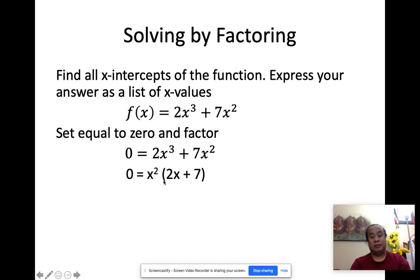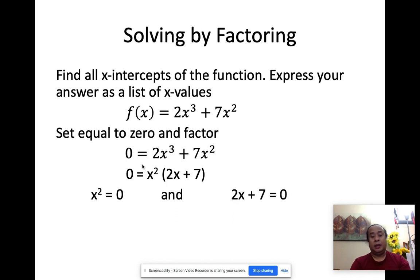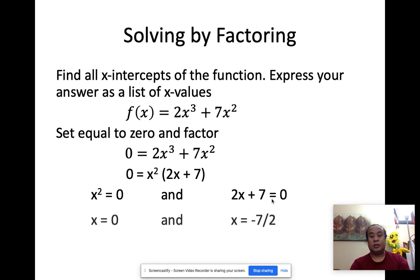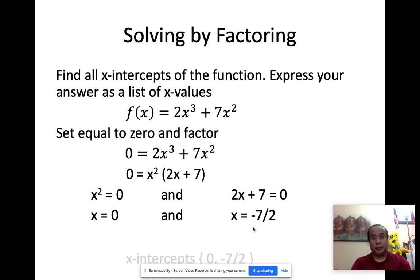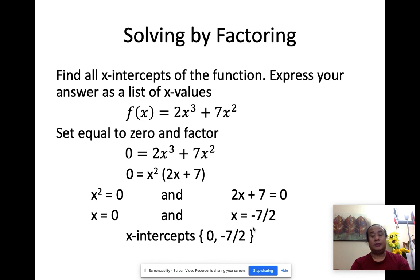Since each of these is a factor, I'm going to separate them. That gives us x squared equal to zero or 2x plus 7 equal to zero, and then we solve for x. For this case, x equals zero. And the other one would be x equals negative 7 over 2. So our x-intercepts are x equals zero and negative 7 over 2.